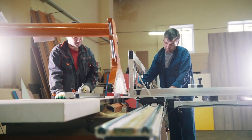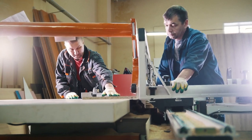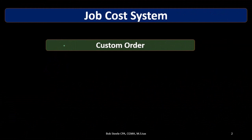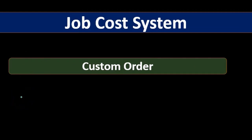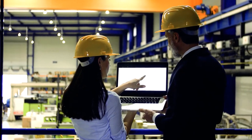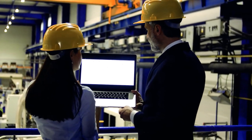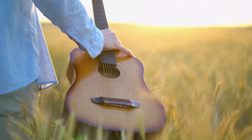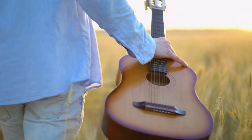Construction jobs are typically different in nature, and therefore we typically use a job cost system. So the first characteristic is: if it's a custom order, then we're typically going to use a job cost system. If we do any kind of manufacturing business that's custom in some way, then the other characteristics follow from it.